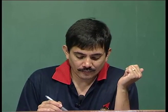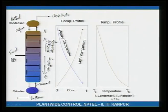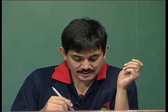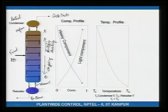Below the feed, looking at the liquid tray compositions, the composition of A is getting depleted — becoming less and less. A is being stripped away, which is why the section below the feed is called the stripping section.